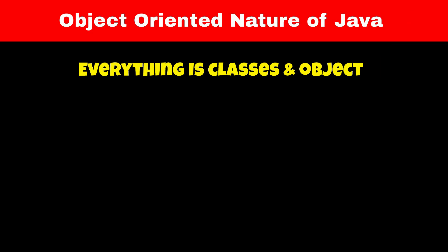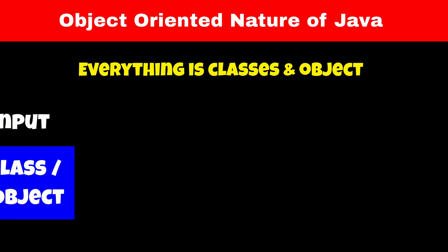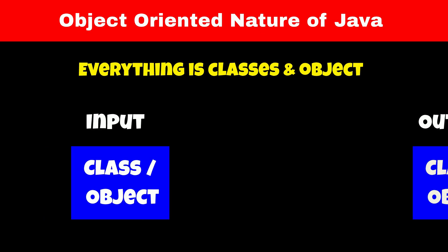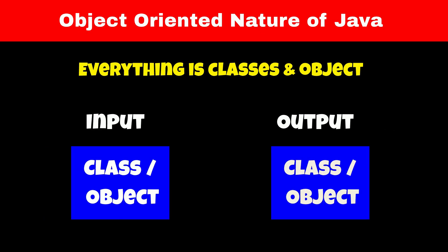Java is an object-oriented programming language, meaning everything in Java is made up of classes and objects. We need objects for everything — if we have to take input, we need objects. If we want to display output, we have to use classes and objects.